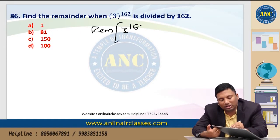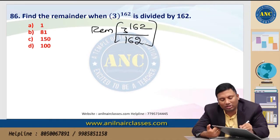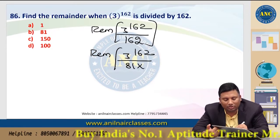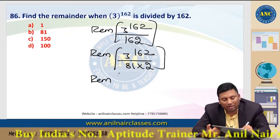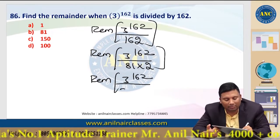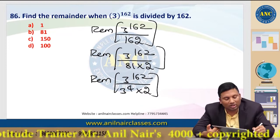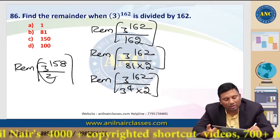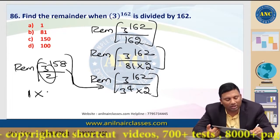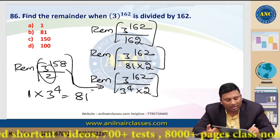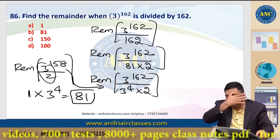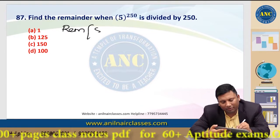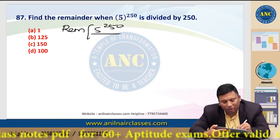86th problem: 3^162 divided by 162. 162 = 81 × 2 = 3^4 × 2. So 3^162 ÷ (3^4 × 2) = 3^158 ÷ 2. Since I want 3^162 = 3^158 × 3^4 = 3^158 × 81. The answer is 81.